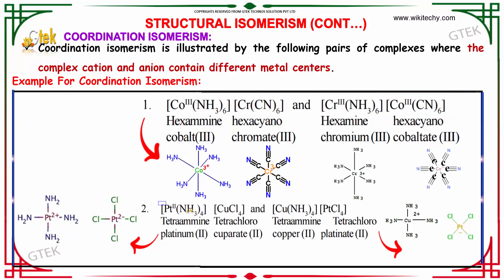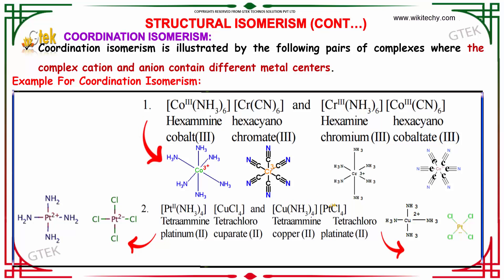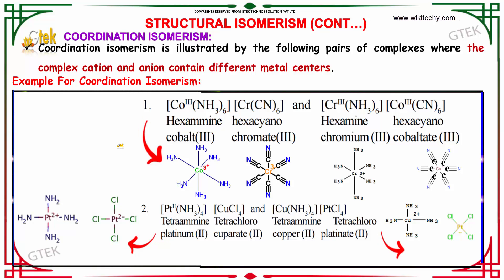Now, platinum joined with amine, and platinum joined with chloride. Copper joined with chloride and copper joined with amine. So there is a change — this is called structural isomerism.